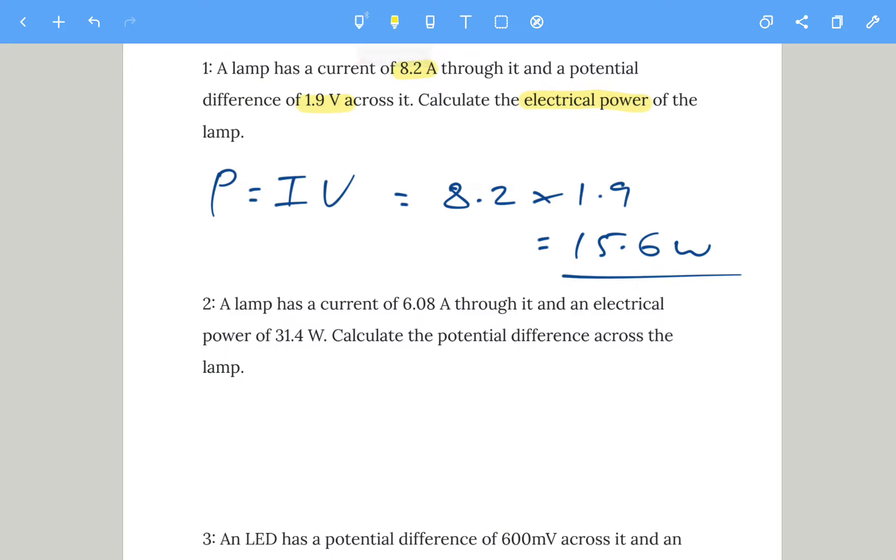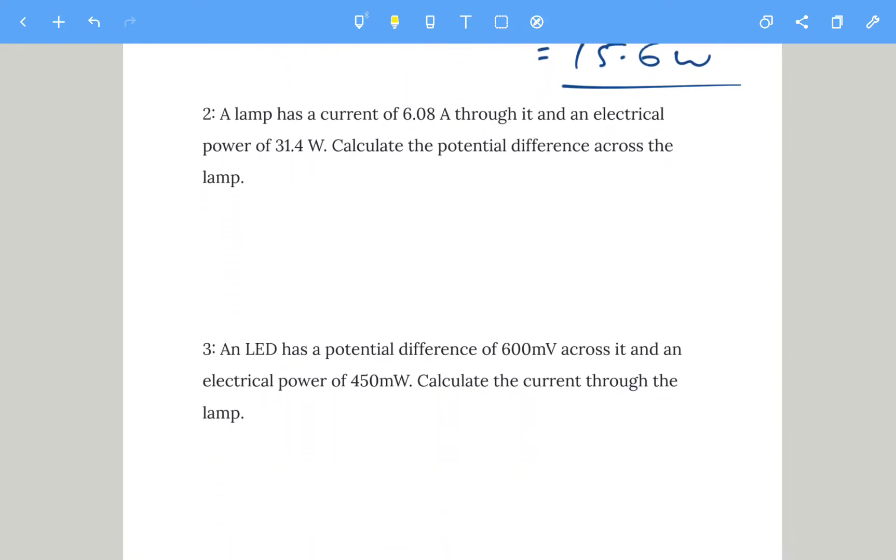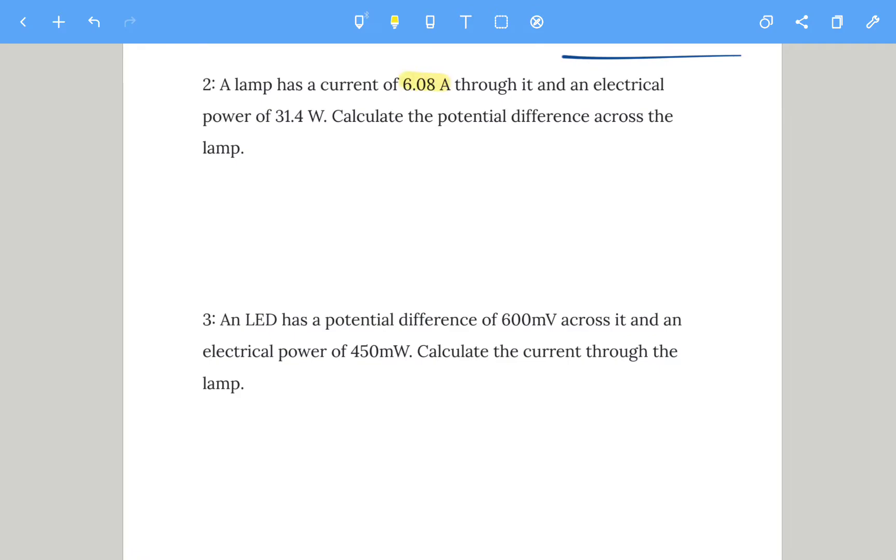Let's look at the second one. A lamp has a current of 6.08 amps through it and electrical power of 31.4 watts. This time we're going to calculate the potential difference or the voltage. So it's P equals IV.